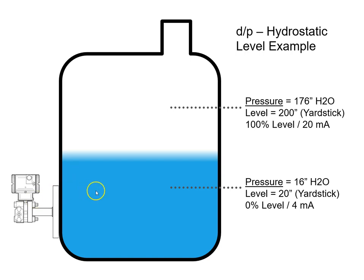As you see in the example, at our low range value, we're measuring 16 inches of water — that's our pressure measurement — and we can convert that into 20 yardstick inches of level. At our upper range value, we're measuring 176 inches of water as a pressure measurement, and then we're inferring the actual level of 200 yardstick inches off of that.